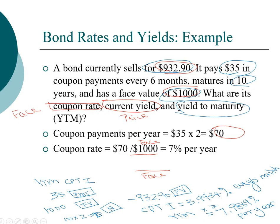Now you know how to compute the different bond rates and also the yield to maturity. I want to talk a little bit more about yield to maturity. Yield to maturity is an important concept because it represents the return you can expect to get if you pay $932.90 for this bond and receive all the promised payments. So you'll receive 20 payments of $35 each and $1,000 at maturity.